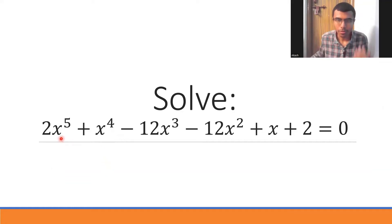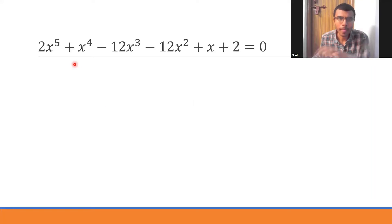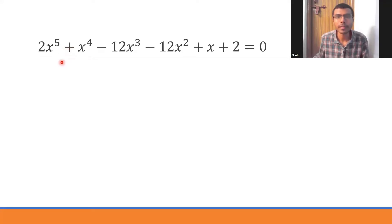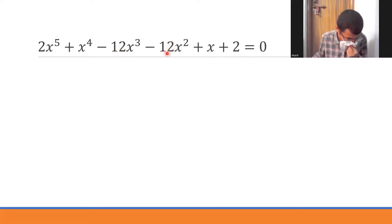Let us see how to solve this 5th-degree polynomial and get the roots. The degree of this polynomial is 5, so it's an odd-degree polynomial. It's also a reciprocal equation. The coefficient of x⁵ and the constant are the same; coefficient of x⁴ and x are the same; coefficient of x³ and x² are the same — hence it is a reciprocal equation.